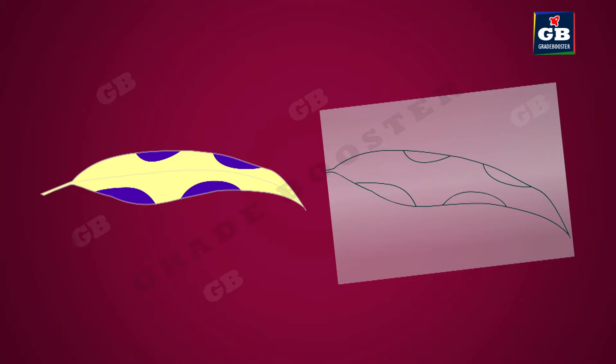We observe that starch is prepared only in the green-colored parts of the leaf. Hence, we proved that chlorophyll is important for photosynthesis.